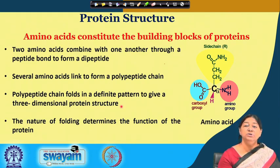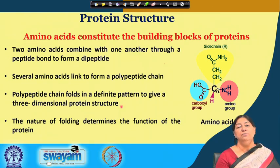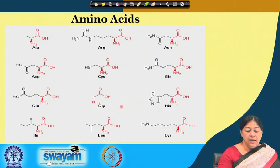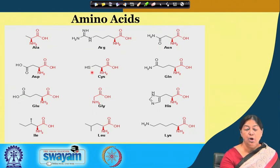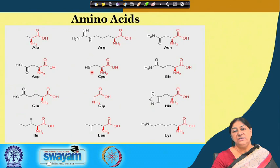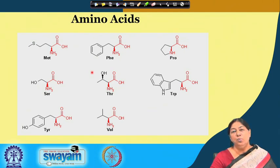The importance of folding lies in the fact that a unique folded protein structure renders a specific function to the protein, and any disruption in the structure means a disruption in the function. Looking at the different R groups, we have the amino group, the carboxylic group, and the side chain. We have acidic amino acids, basic amino acids, and hydrophobic amino acids. The characteristics of these amino acids are extremely important in protein folding.